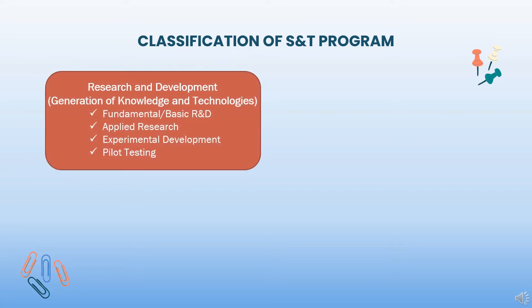S&T programs are classified as follows. Research and Development or R&D is defined as comprising creative work undertaken on a systematic basis in order to increase the stock of knowledge through the conduct of the following activities: Fundamental Basic Research, Applied Research, Experimental Development, and Pilot Testing.